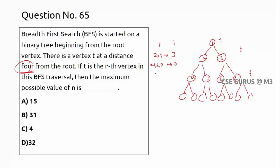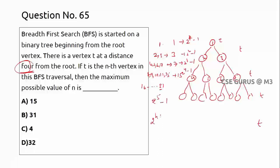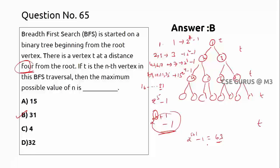At level four, nodes are numbered from 8 through 15, so the maximum possible value is 15. At level five it would be 16 through 31, maximum 31. The pattern is 2^1 - 1, 2^2 - 1, 2^3 - 1, 2^4 - 1, 2^5 - 1, giving the formula 2^(h+1) - 1. With height h = 4, the answer is 2^5 - 1 = 31, so option B is correct. We'll see more questions in the next video lecture. Thank you.